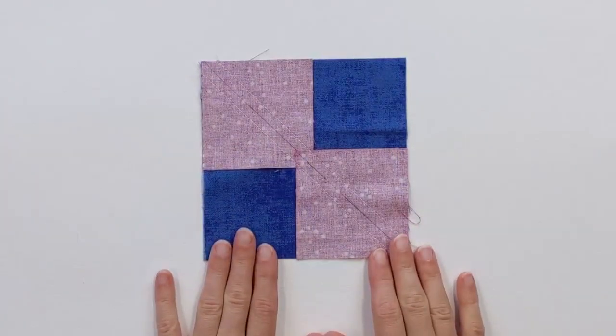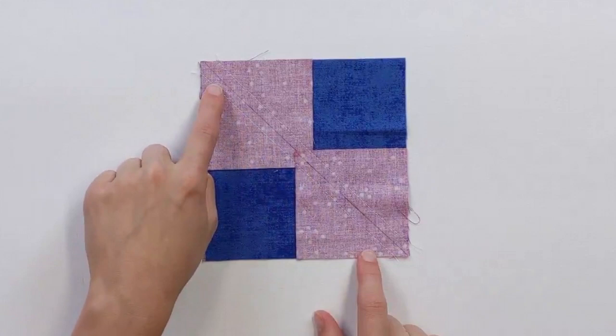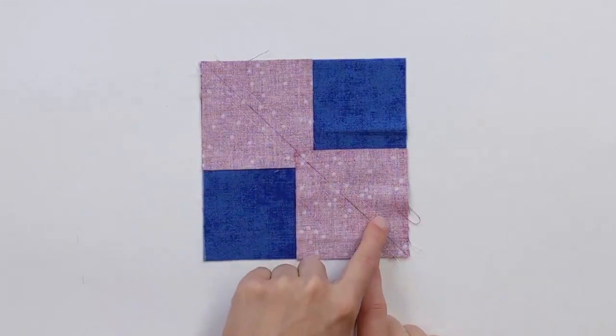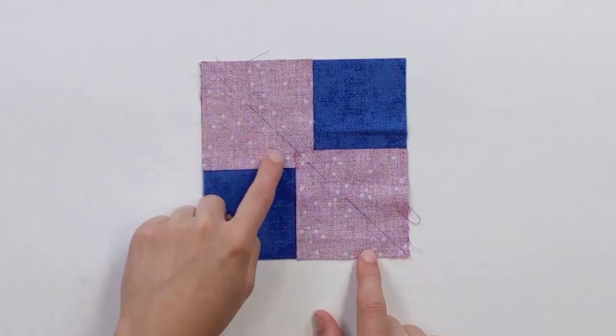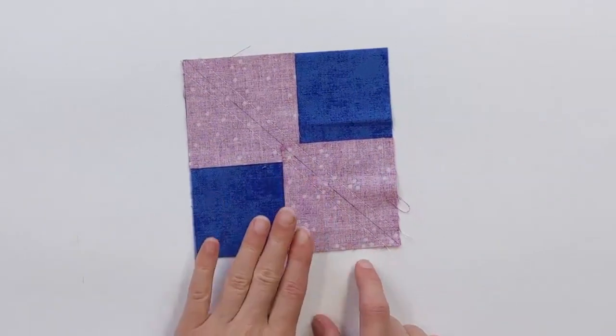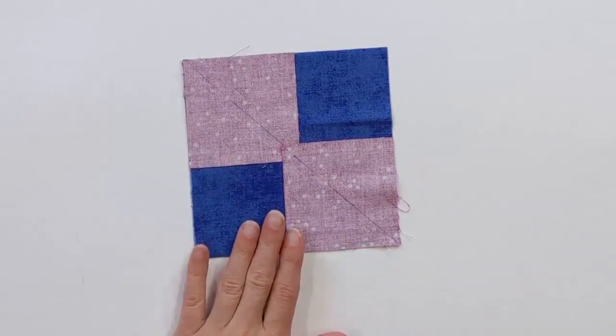Okay, so this is what it's going to look like. I've got my line in the middle that I've drawn. A quarter of an inch away I have one stitch line, and a quarter of an inch away on the other side I have another stitch line. So this is how our first part of our flying geese is completed.